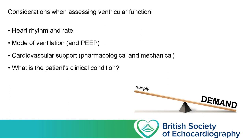In AF, before each contraction there'll be a different amount of blood within the left ventricle — a different amount of preload — and this impacts how much blood is ejected forward. What's the rate? Is the heart going so fast that there's no time to fill? Or is it so slow that even though the volume of blood ejected seems adequate, the overall cardiac output — which is the product of stroke volume and heart rate — doesn't meet the body's demands?